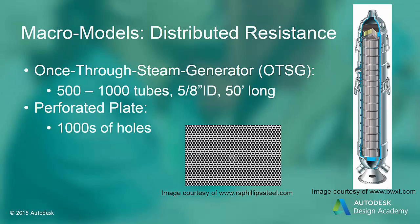Here are two examples of why we need to use macro models. In the OTSG there are hundreds or even thousands of tubes that make up the steam generator. To mesh just one tube would require a mesh with 5000 nodes. Multiply this by 500 tubes and the mesh now has 2.5 million nodes just for the tubes. To mesh around each tube would require at least twice that many nodes, and you can see how the mesh would grow rapidly if we tried to model each tube individually. The same rapid mesh growth would result when trying to mesh the perforated plate shown.